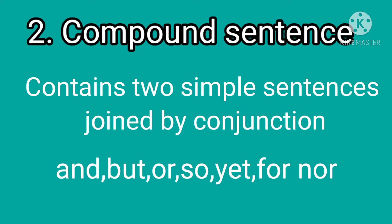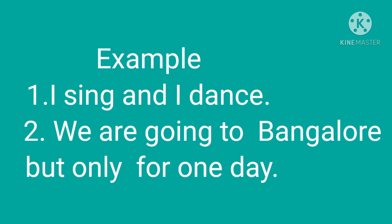The second type is compound sentence. A compound sentence contains two simple sentences joined by a conjunction. The conjunctions are: and, but, or, so, it, for, nor. Using those words, we make one compound sentence. Examples: I sing and dance. We are going to Bangalore, but only for one day.